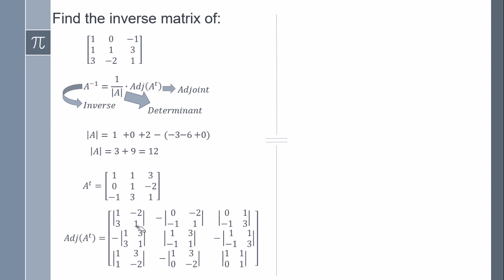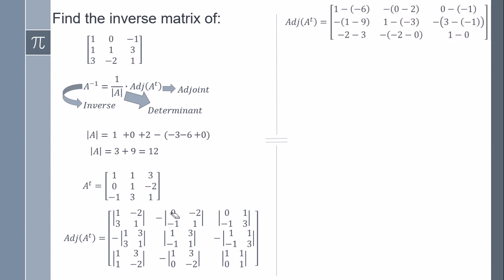After covering, I compute the determinant of each sub-matrix by multiplying the diagonal and subtracting the other. So: one times one minus three times minus two gives one plus six equals seven. Then zero times zero minus zero times one is zero. Then minus one times one minus three times minus one gives minus one plus three equals two.